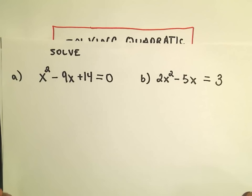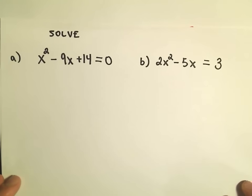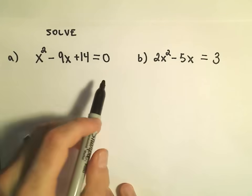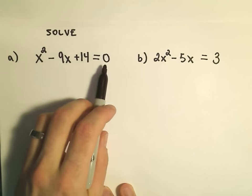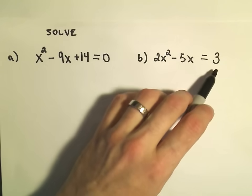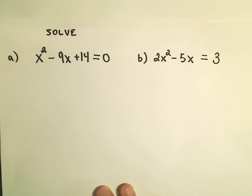In our first example here we've got x squared minus 9x plus 14 equals 0. The basic idea is we're trying to factor first off. One thing that's important is you want your one side of the equation to be equal to 0. We have that in our first example. We don't have that in our second example, so that's actually something we'll have to do first in that problem.